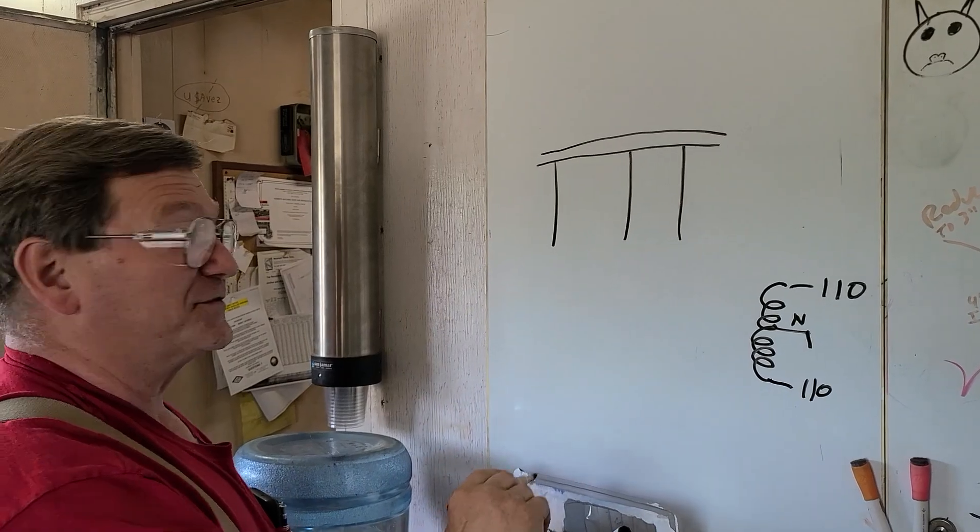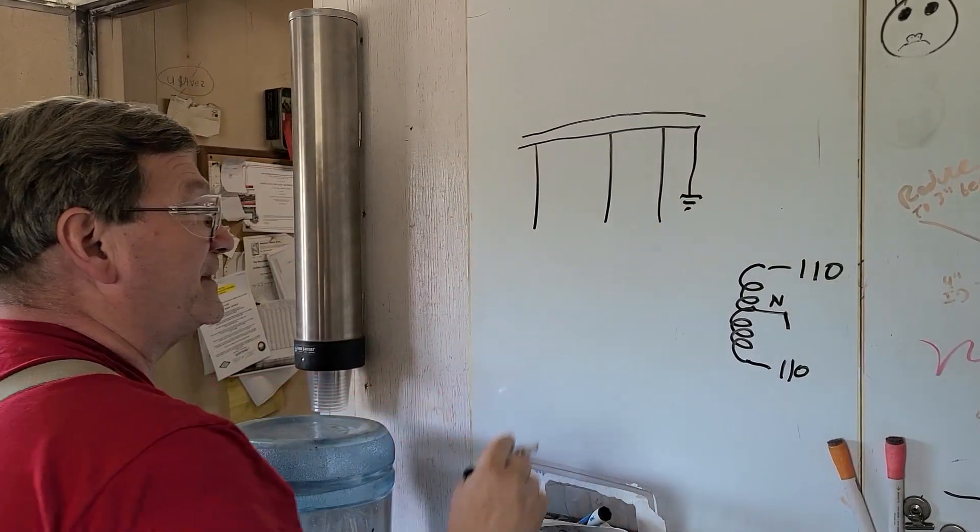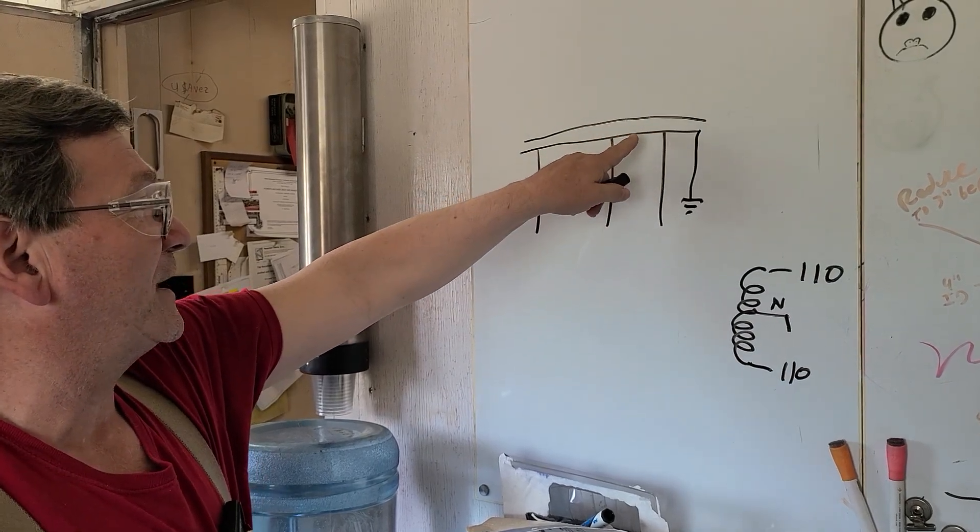We're just doing single phase right now, but we have this overhead line here, and let's say we ground this one. Now, why do we ground one side of our line?